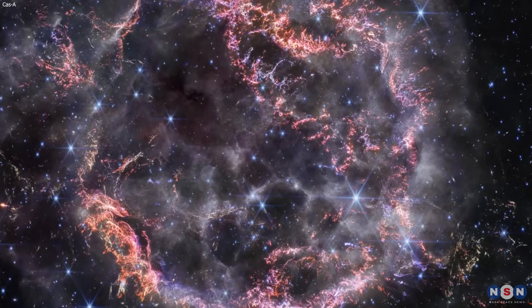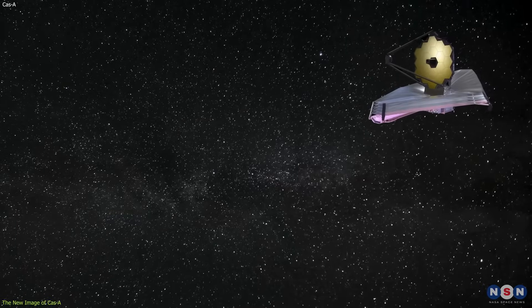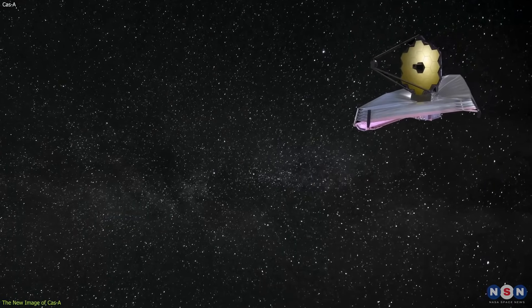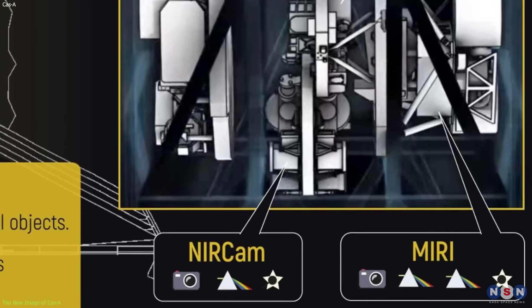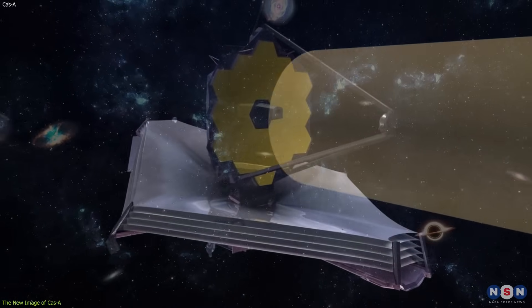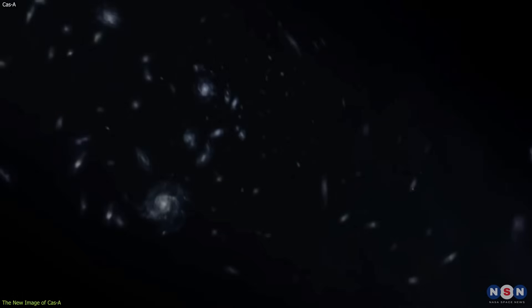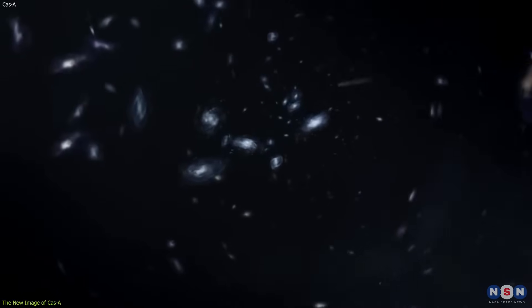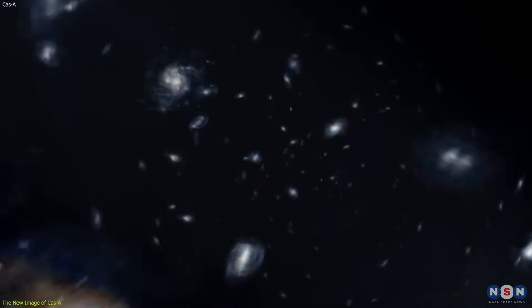The new image of Cassiopeia A was taken by the James Webb Telescope using its near-infrared camera, one of the four instruments on board the telescope, which can observe infrared light from distant galaxies and stars, which is invisible to our eyes, but reveals a lot of information about their temperature, composition, and evolution.